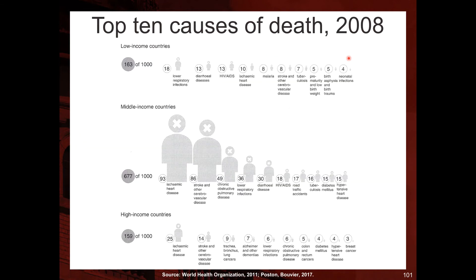Here is an exercise from the WHO, also referenced in our course textbook. They take 1,000 people and distribute them across the world based on the population sizes of low-income, middle-income, and high-income countries. About 67.7% of the world's population is concentrated in middle-income countries, 16.3% in low-income countries, and 15.9% in high-income countries — giving 677, 163, and 159 people respectively out of 1,000.